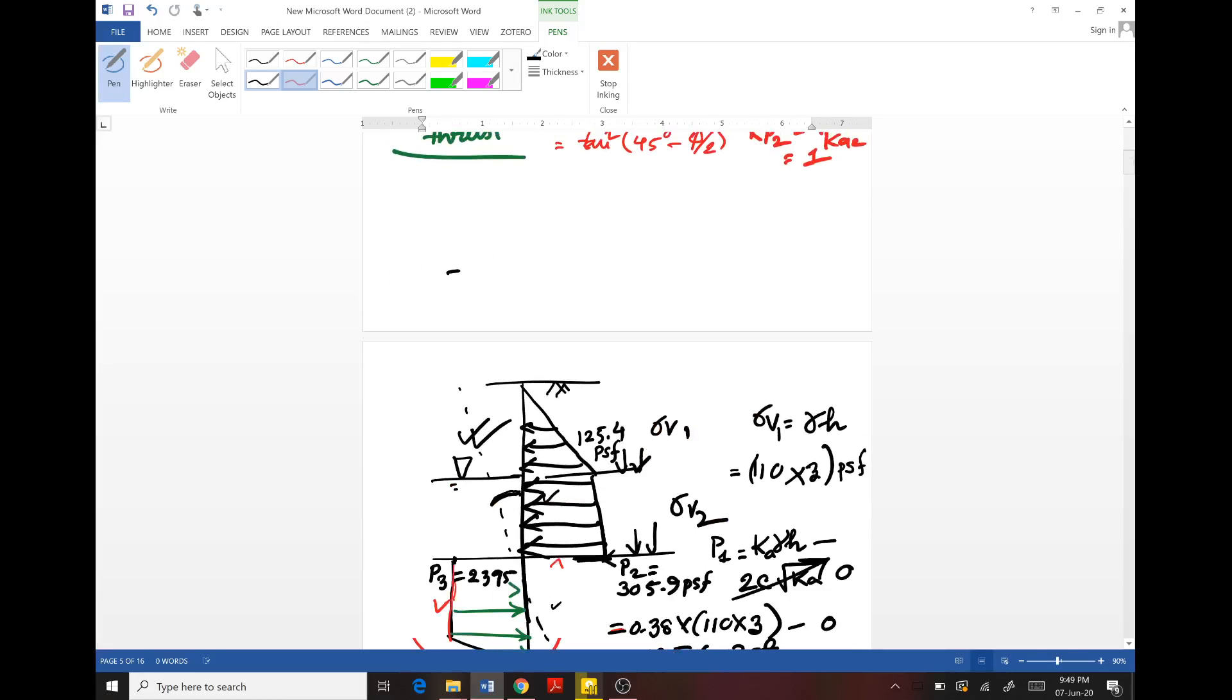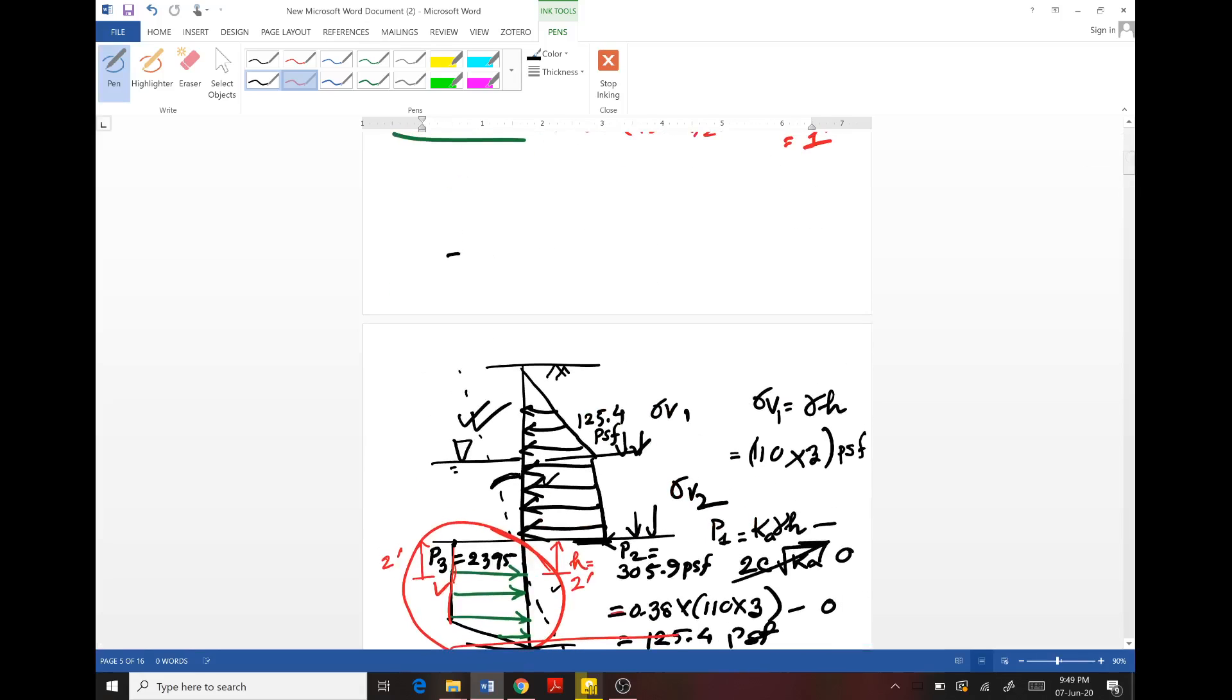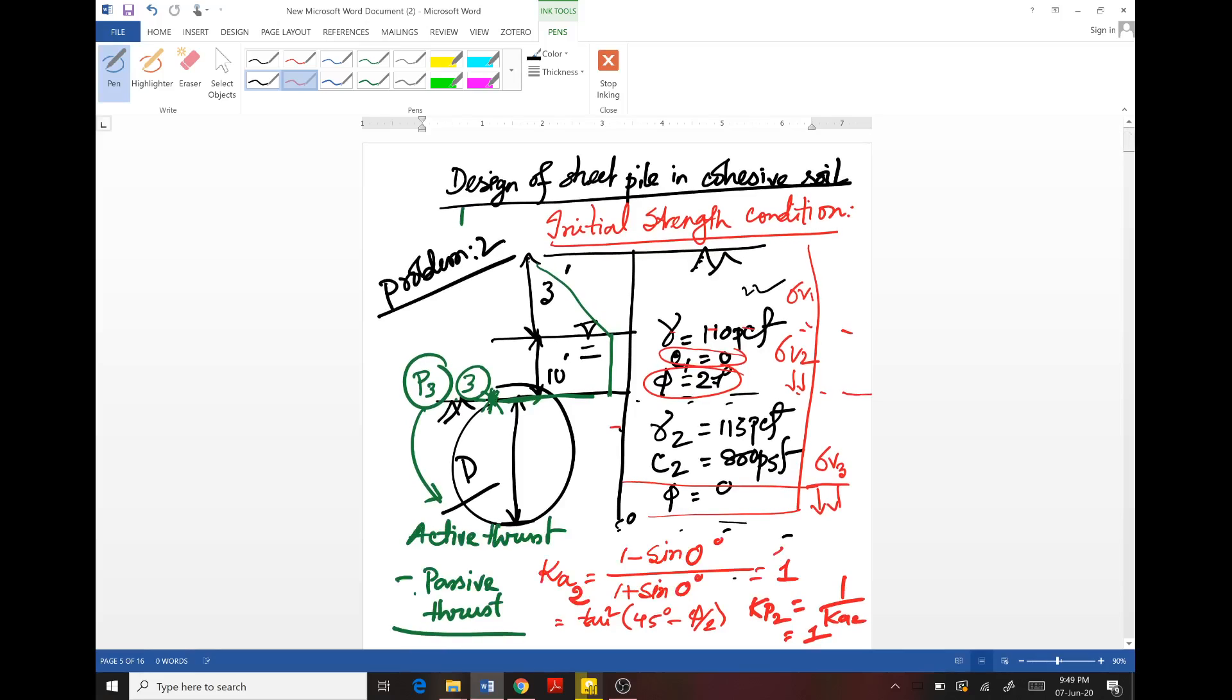In the previous lecture I discussed elaborately that for this design of sheet pile in cohesive soil, we have used the undrained strength parameters of the soil. In this regard, initial condition when drainage doesn't occur fully, there will be only cohesion of the cohesive soil.